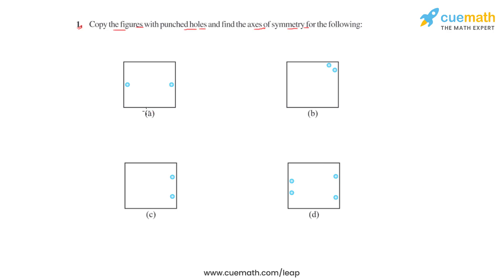For example, if we consider the first figure of this set — figure A — and we draw a vertical line that divides the figure into two equal halves, and if we fold this figure about this line, we will see that both equal halves of the figure will coincide. So for figure A, this vertical line is the axis of symmetry.